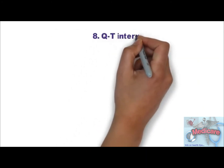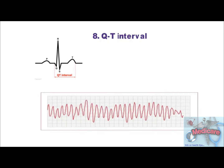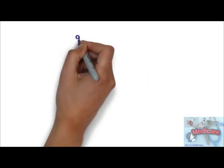Step 8 is QT interval. It is measured from the start of Q wave to the end of T wave. As a rule of thumb, normal QT is less than half the preceding RR interval. An abnormally prolonged QT is associated with increased risk of ventricular arrhythmias, especially torsades de pointes.